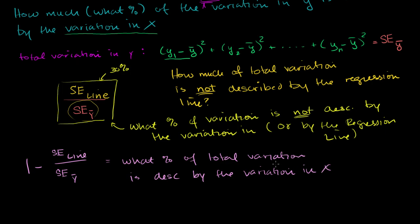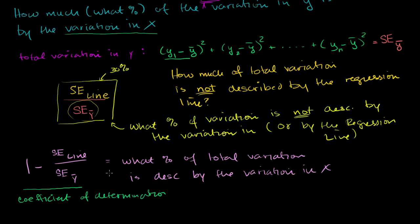This number right here is called the coefficient of determination. It's just what statisticians have decided to name it — the coefficient of determination. And it's also called r².